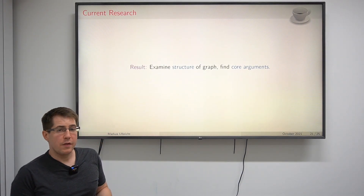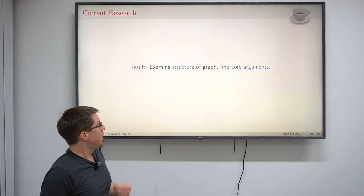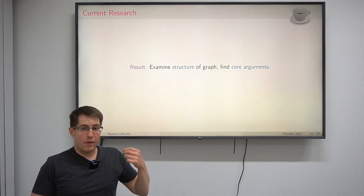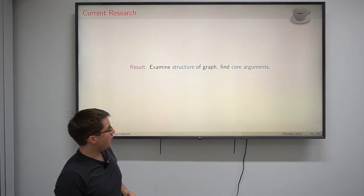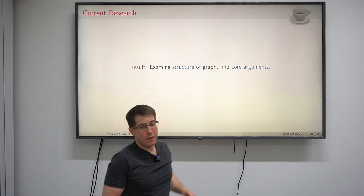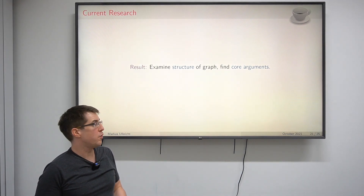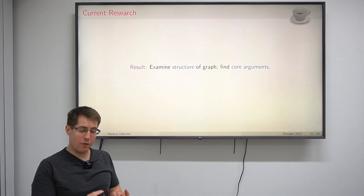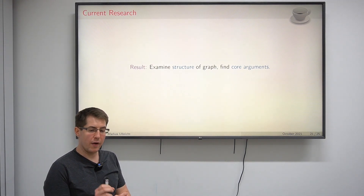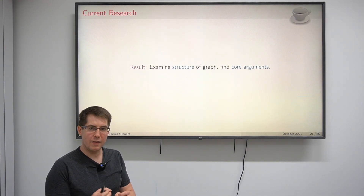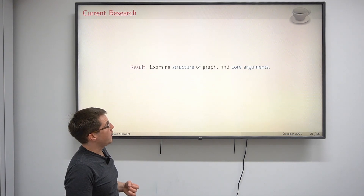Our result is that with a simple check — even a syntactical check — you can just examine the structure of a graph and find these core arguments. It is really simple to find them, which is nice because it means that finding these arguments and deciding the debate in a satisfactory way is fairly easy to do.